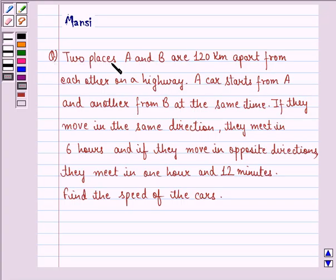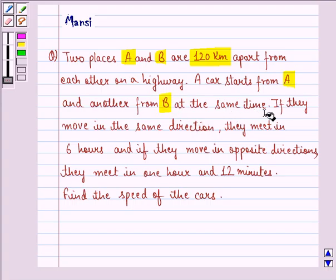The question says, two places A and B are 120 km apart from each other on a highway. A car starts from point A and another from B at the same time.